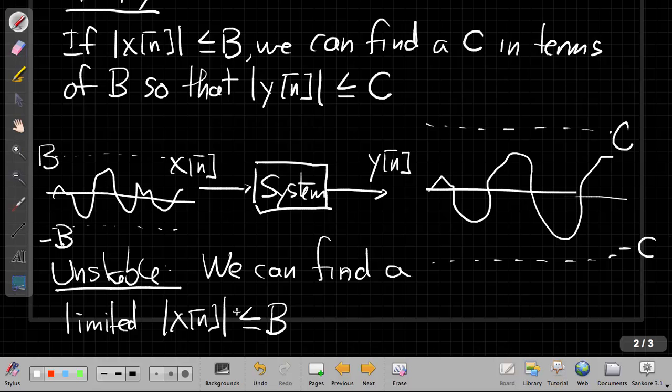So we can find some input that's always between plus or minus B that makes the absolute value of the output, the magnitude of the output, blow up, go to infinity. So if a system's unstable, there must be some bounded input that makes it blow up. So that seems pretty simple in practice, but a lot of people find problems proving these different. It's not always as easy to break it down step by step like we've talked about with linearity and time invariance.